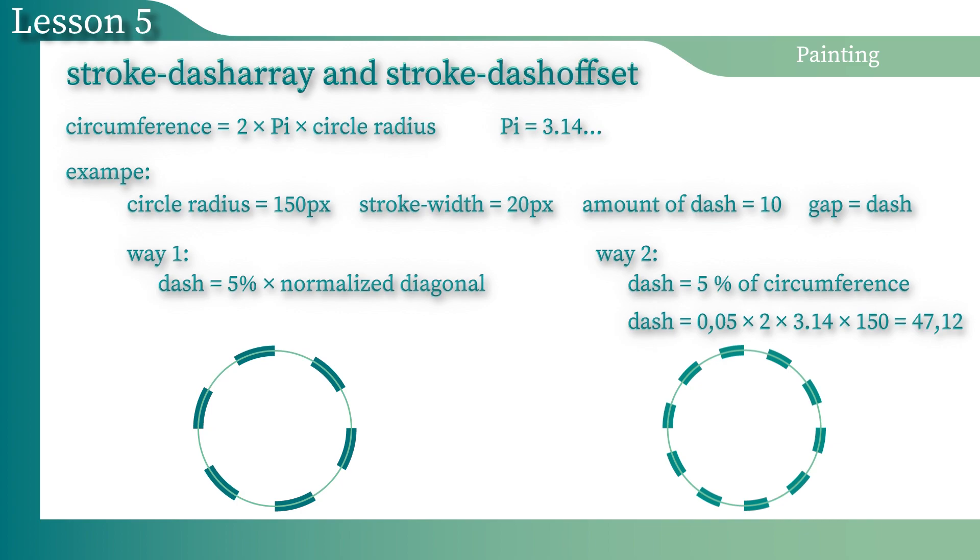When we have the circumference length, we can calculate the result by multiplying the circumference length by 5%. Then, we should add the result as the value of the DashArray's parameters.